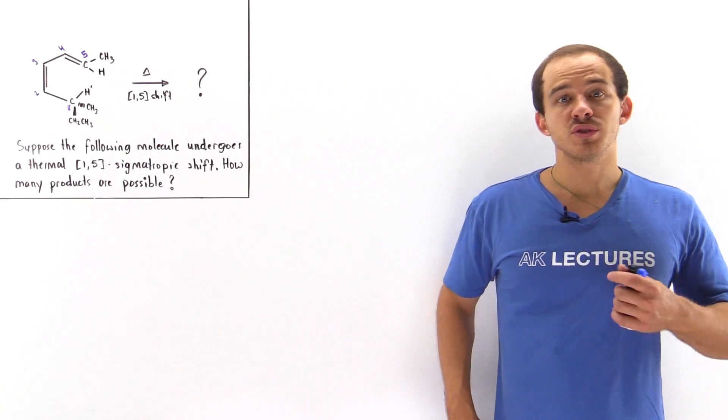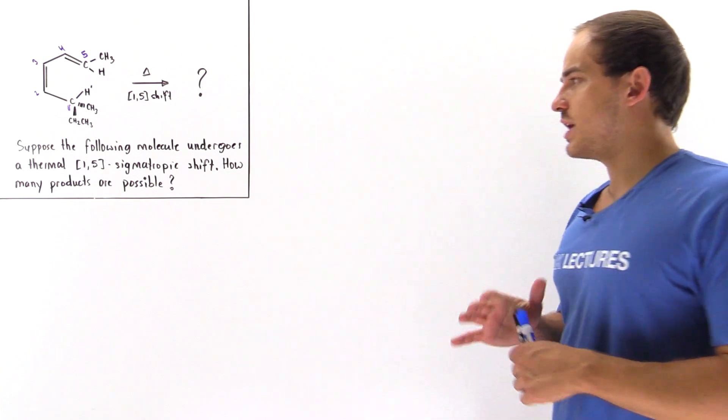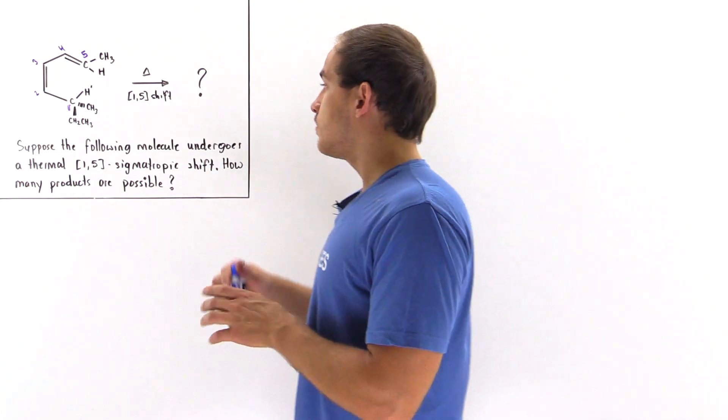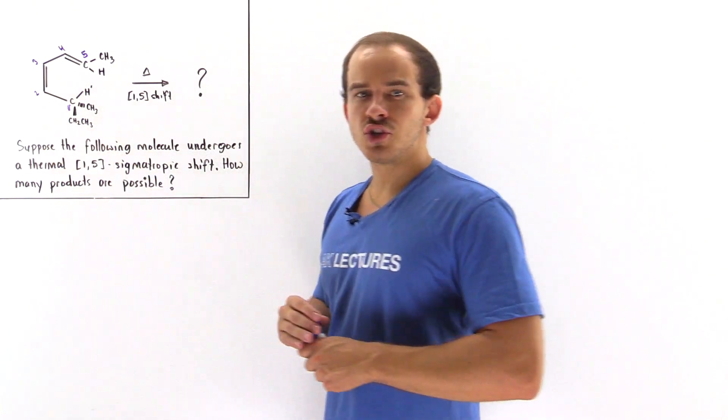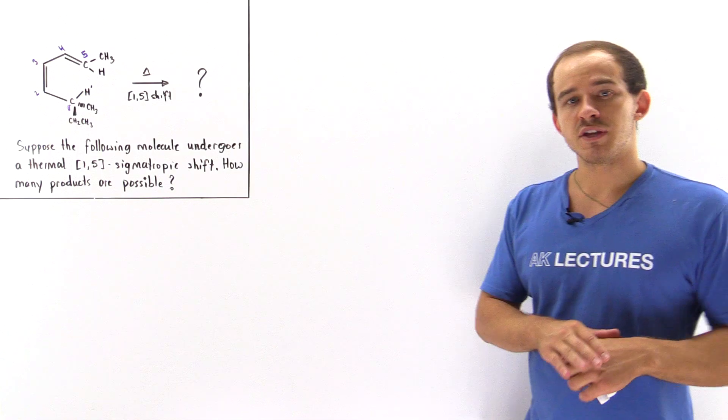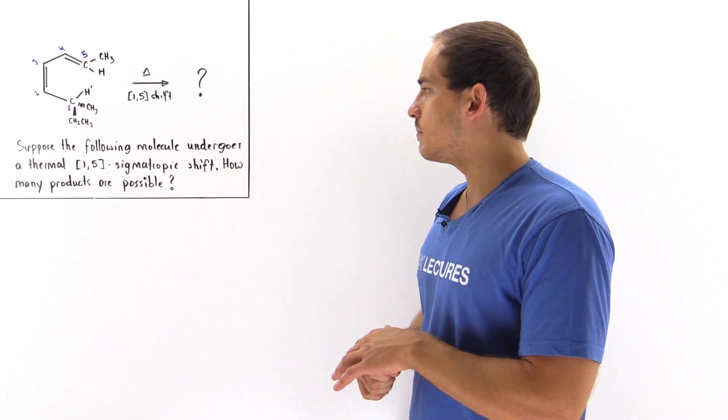So now that we discussed the two types of sigmatropic shifts, let's take a look at the following reaction that deals with a sigmatropic shift. Suppose the following molecule undergoes a thermal 1,5 sigmatropic shift in which the H atom on the first carbon migrates onto the fifth carbon.